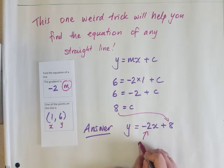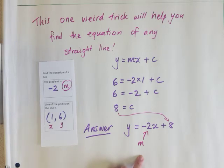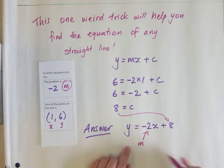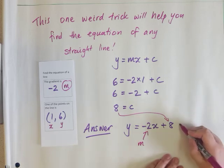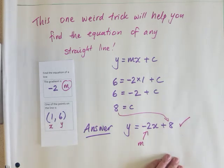The -2 was the gradient which is letter m, and in my equation I have the letters y and x to show that I can use this now for any value of x to get any value of y. And that is my equation.